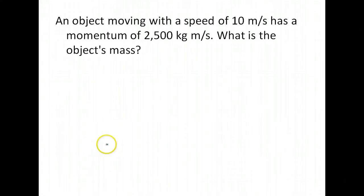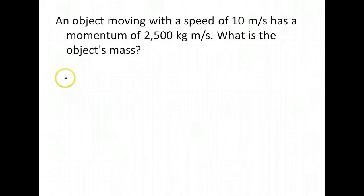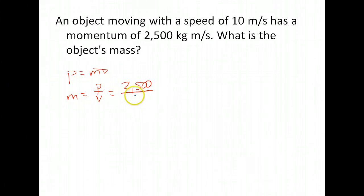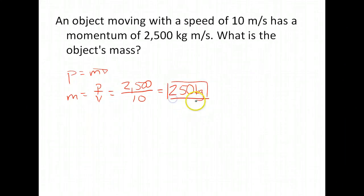An object moving with a speed of 10 meters per second has a momentum of 2,500 kilogram meters per second. What is the object's mass? We use the momentum formula and rearrange to solve for mass: mass equals momentum over velocity. So 2,500 divided by 10 meters per second gives us 250 kilograms.